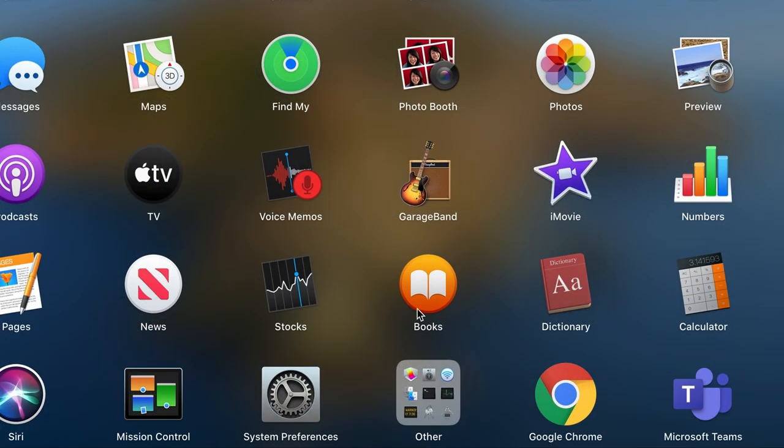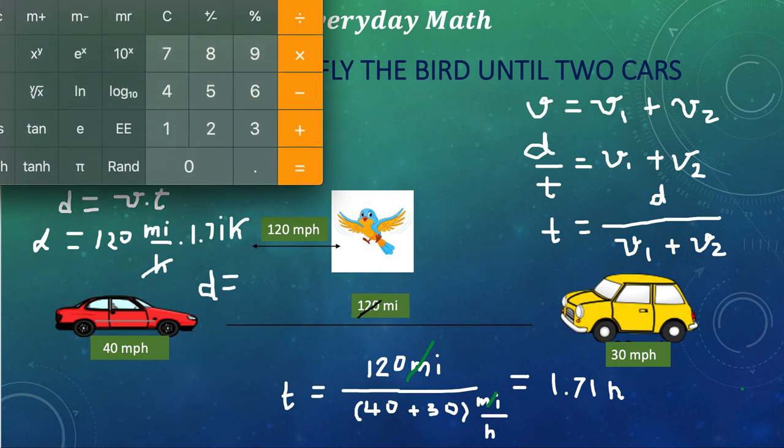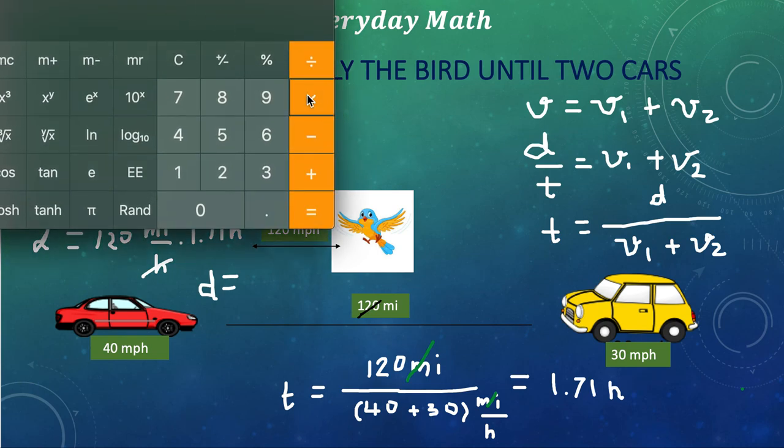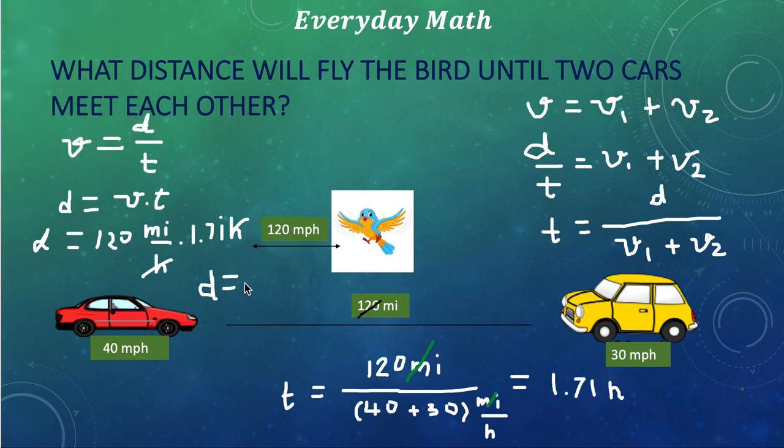First of all, let me take a calculator here. I have 1.71, I am approximating, times 120. This is 205.2. So, the distance is going to be 205.2 miles.